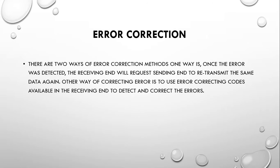There are two ways to correct errors. One way is to have the receiving end request the sender to retransmit the same data again once an error is detected. The other way is to use error-correcting codes available at the receiving end to detect and correct the errors automatically.